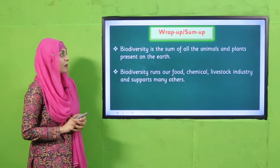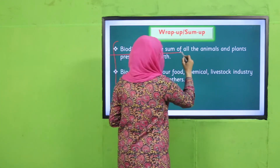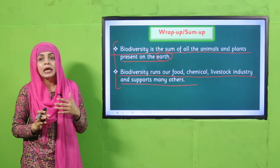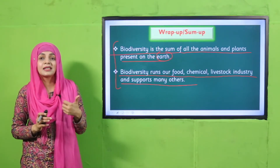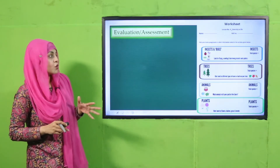Today we have learned that biodiversity is the sum of all the animals and plants present on Earth. Biodiversity supports our food, chemical, and livestock industries and supports many others. This variety is the very foundation of life's existence on Earth.